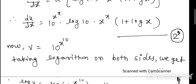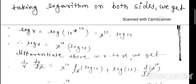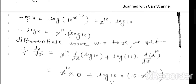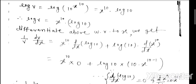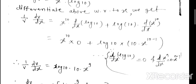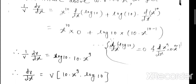For dv/dx where v equals 10^(x^10): taking log, log v equals x^10 · log 10. Differentiating: 1/v · dv/dx equals x^10 · 0 + log 10 · 10·x^9 equals 10·x^9 · log 10. Therefore dv/dx equals v · 10·x^9 · log 10 equals 10^(x^10) · 10·x^9 · log 10. Here we used the formula derivative of x^n equals n·x^(n−1) with n equal to 10.